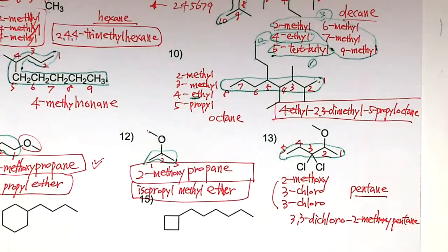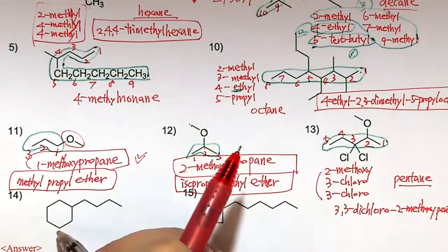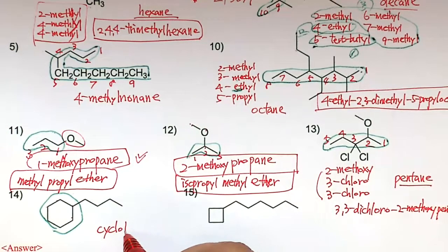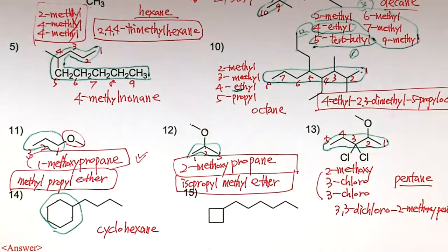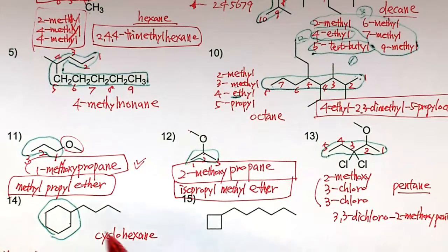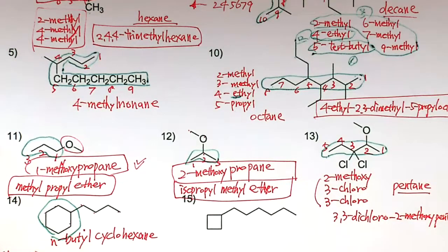Number 14. Longest chain: 1-2-3-4-5-6 — cyclohexane (six-carbon ring). Numbering: 1-2-3-4. There's a butyl group. Since it's a normal butyl (n-butyl) group as a branch, it's n-butylcyclohexane. For the next example, the longest chain is not the ring — the straight chain is longer at 6 carbons (hexane), and the ring is the branch.